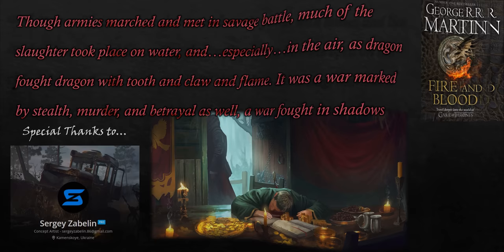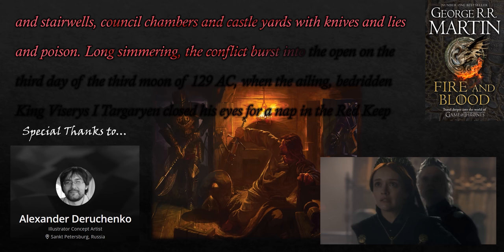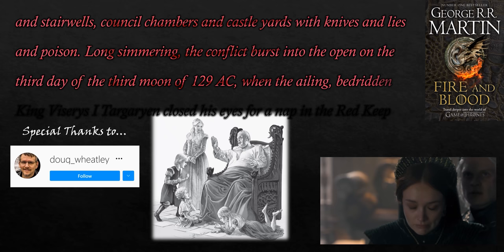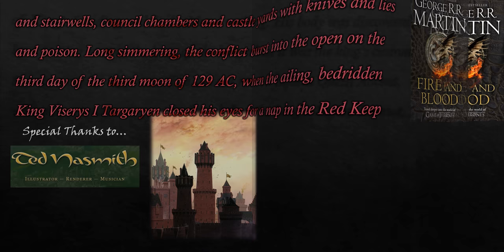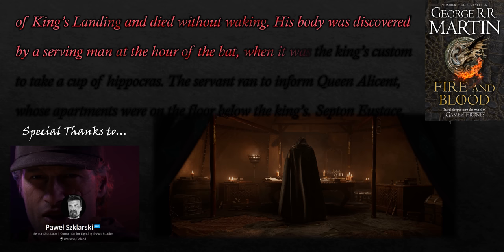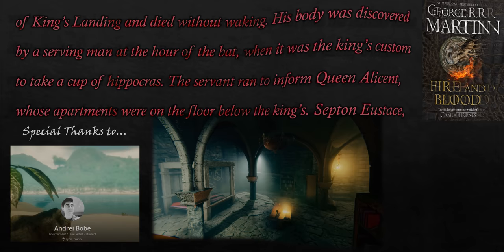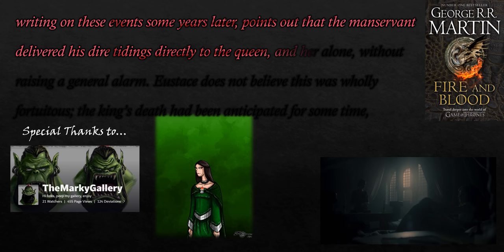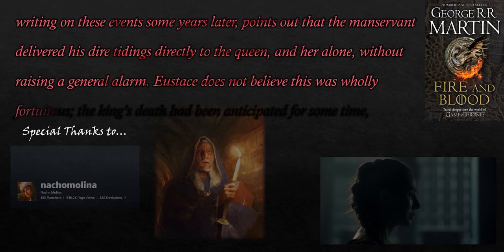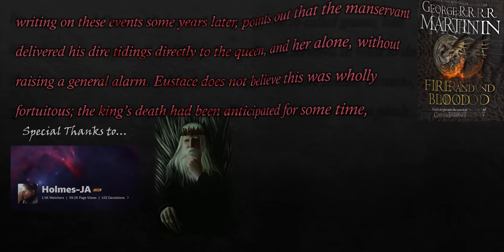Long simmering, the conflict burst into the open on the third day of the third moon of 129 AC, when the ailing, bedridden King Viserys I Targaryen closed his eyes for a nap in the Red Keep of King's Landing and died without waking. His body was discovered by a serving man at the hour of the bat, when it was the king's custom to take a cup of Hippocras. The servant ran to inform Queen Alicent, whose apartments were on the floor below the king's. Septon Eustace points out that the manservant delivered his dire tidings directly to the queen and her alone, without raising a general alarm. Eustace does not believe this was wholly fortuitous — the king's death had been anticipated for some time.